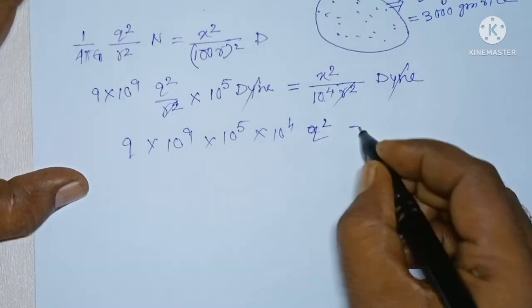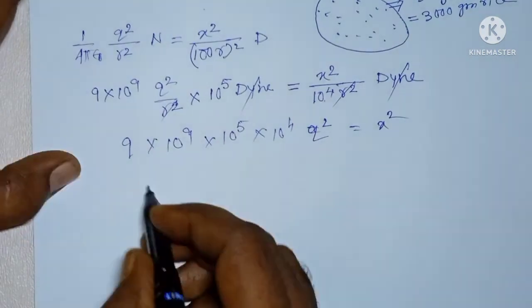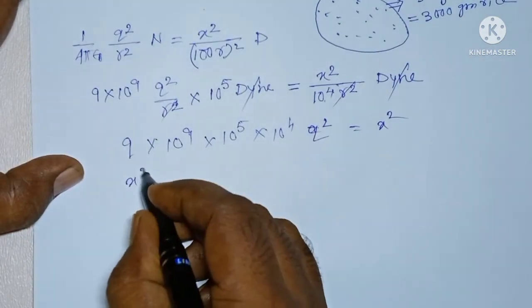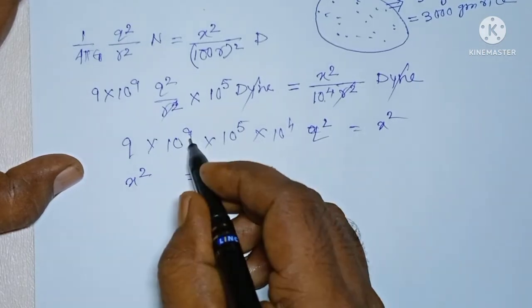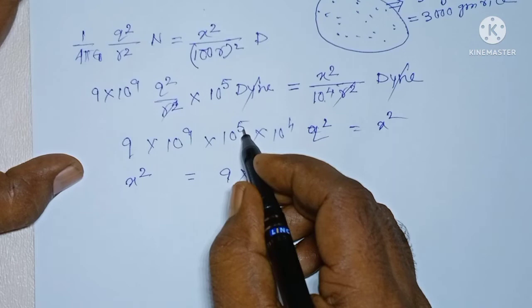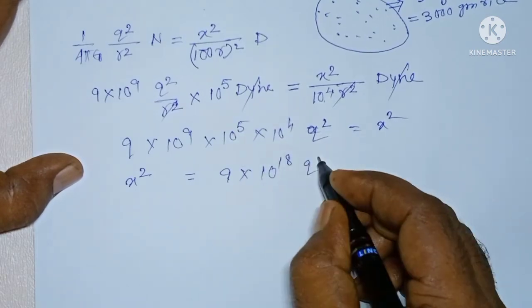So, X square equals to 9 into 10 to the power 9 into 10 to the power 5. Q square equals to X square. So, X square equals to 9 into 10 to the power 9 plus 5, 14 plus 4, 10 to the power 18 Q square.